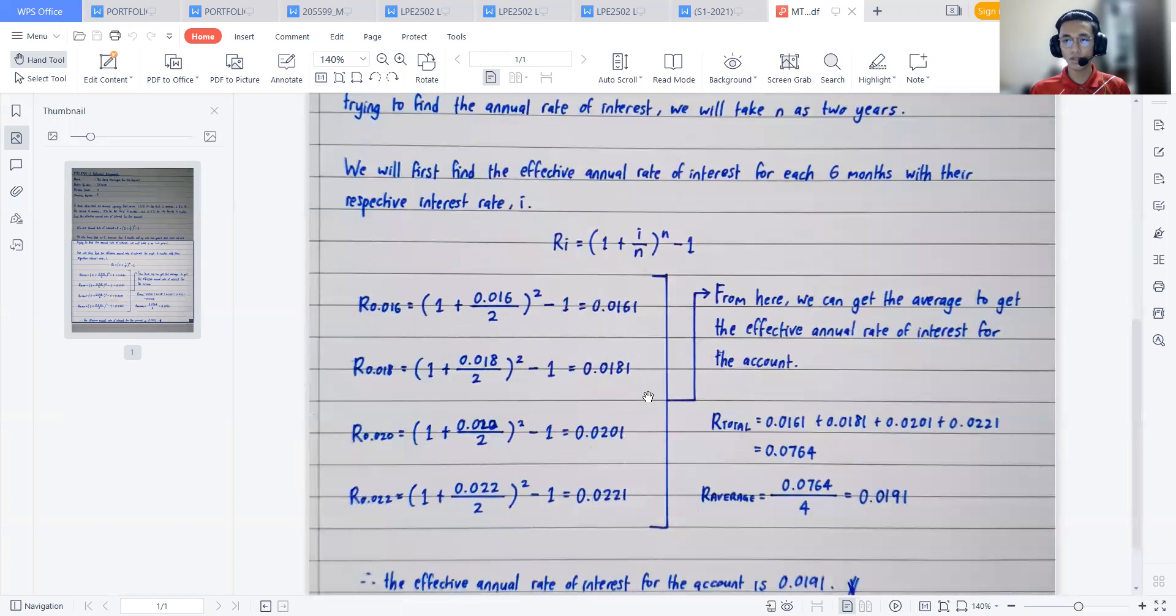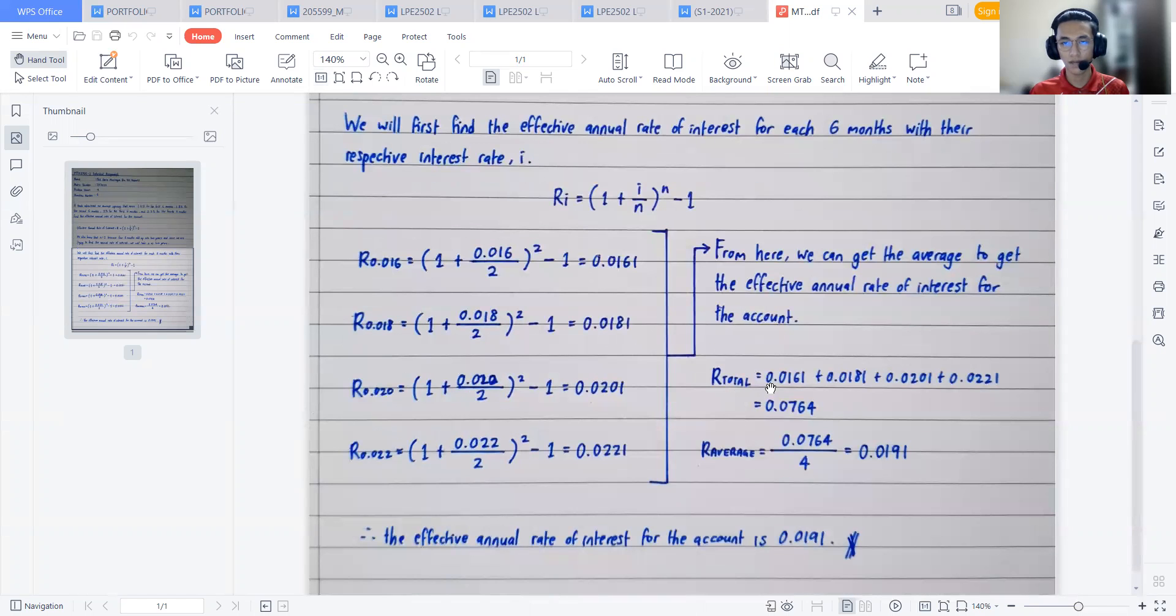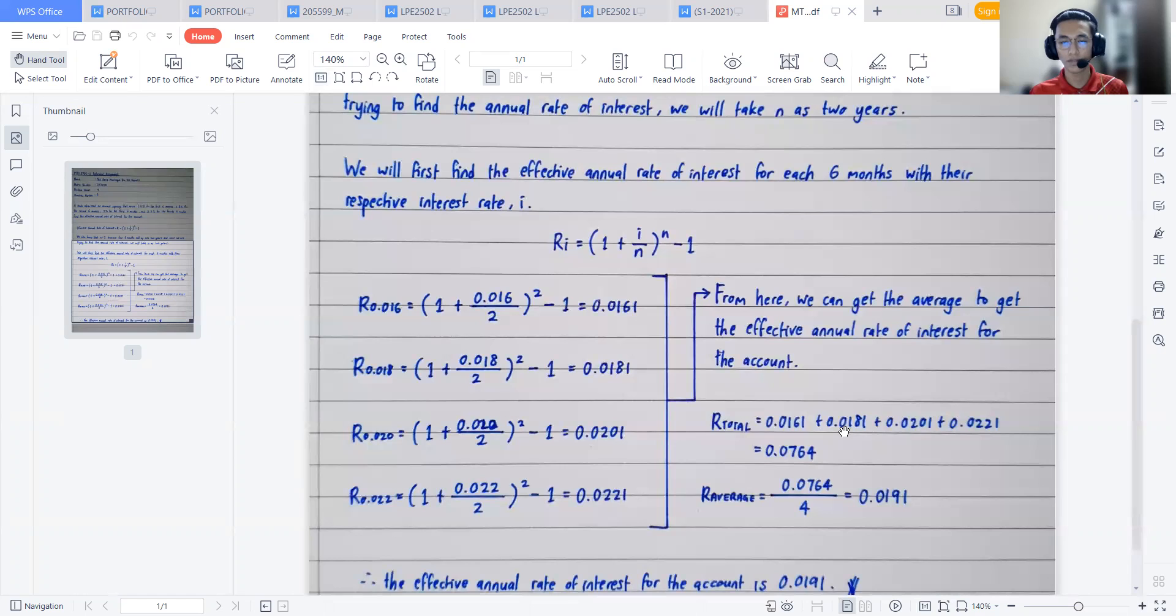All of these numbers, all of this rate of interest, can now be used to find the effective annual rate of interest for the account itself, the main effective annual rate of interest. So in order to get that, we first have to total up all of the individual six months of the interest rate. So first we have 0.0161 + 0.0181 + 0.0201 + 0.0221. From here the answer that we get is 0.0764.